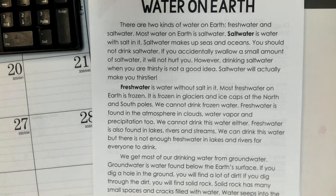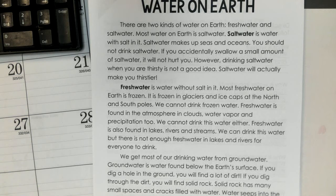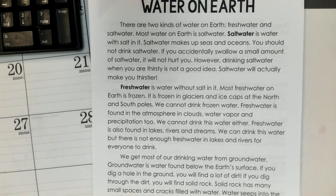There are two kinds of water on Earth: fresh water and salt water. Most water on Earth is salt water. Salt water is water with salt in it. Salt water makes up seas and oceans. You should not drink salt water. If you accidentally swallow a small amount of salt water, it will not hurt you. However, drinking salt water when you are thirsty is not a good idea.